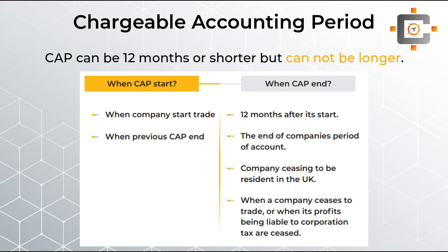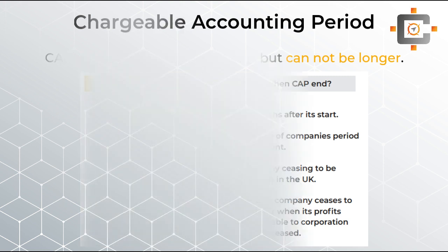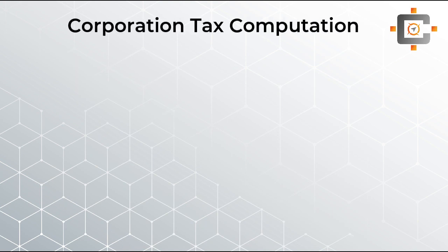Apart from the standard 12-month ending, you can end your CAP early if you have a short accounting period, if you are ceasing your business, or if you are ceasing your residential status in the UK. There are four aspects given for when the CAP will end. This is theory and may not be heavily examined, but it's a very basic aspect for the whole corporation tax syllabus and should not be avoided.